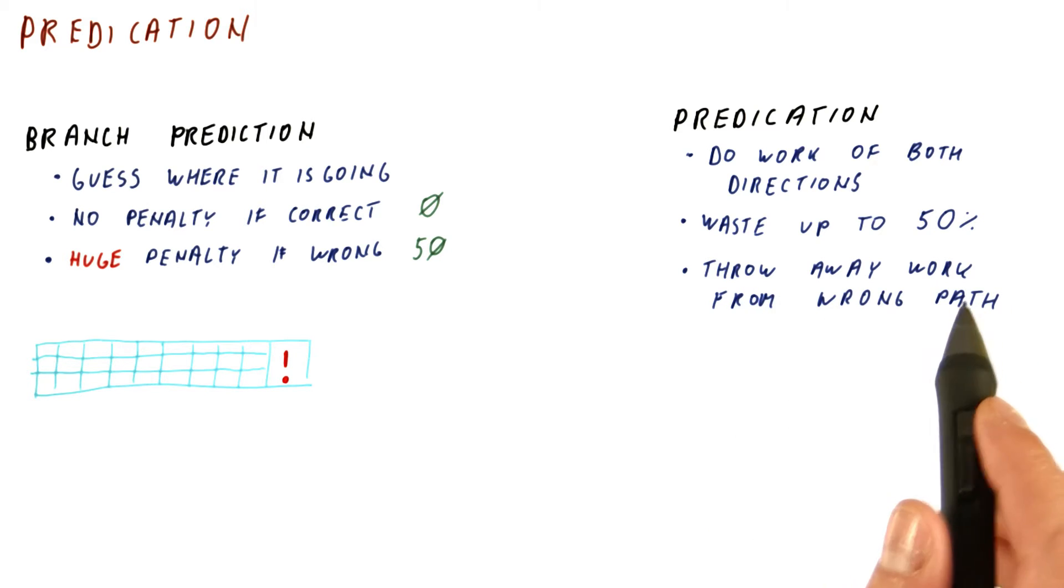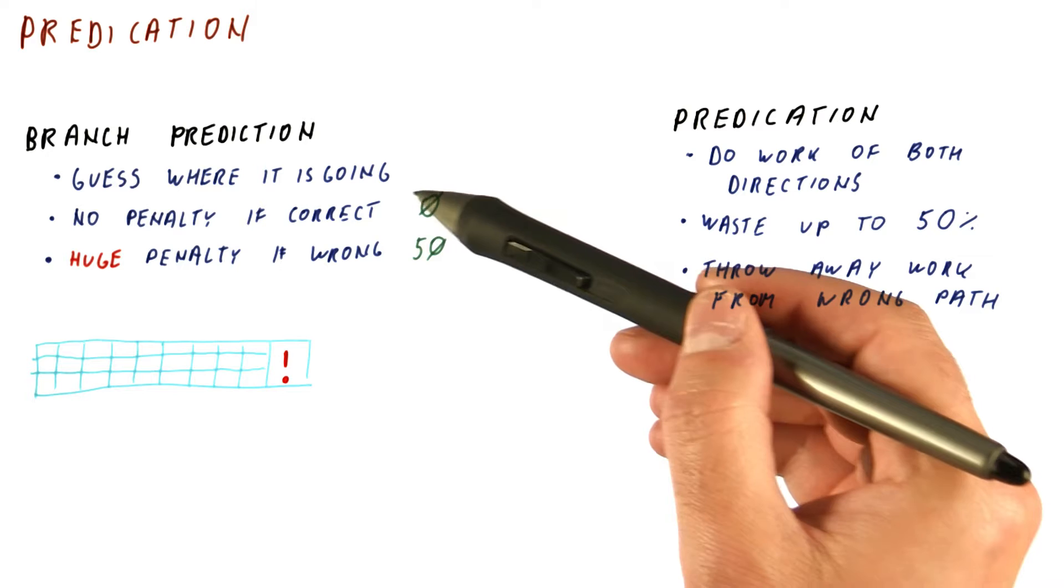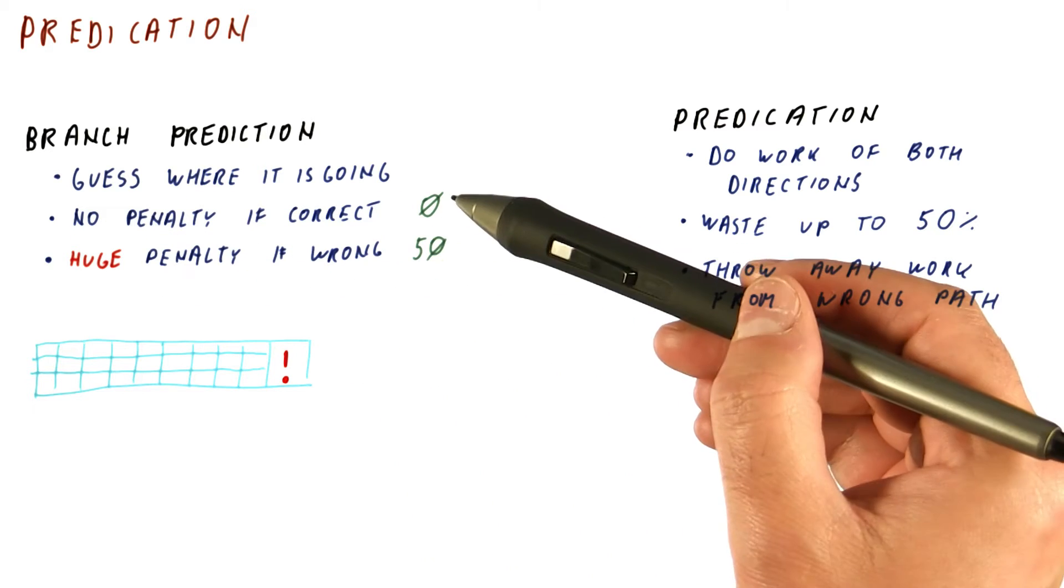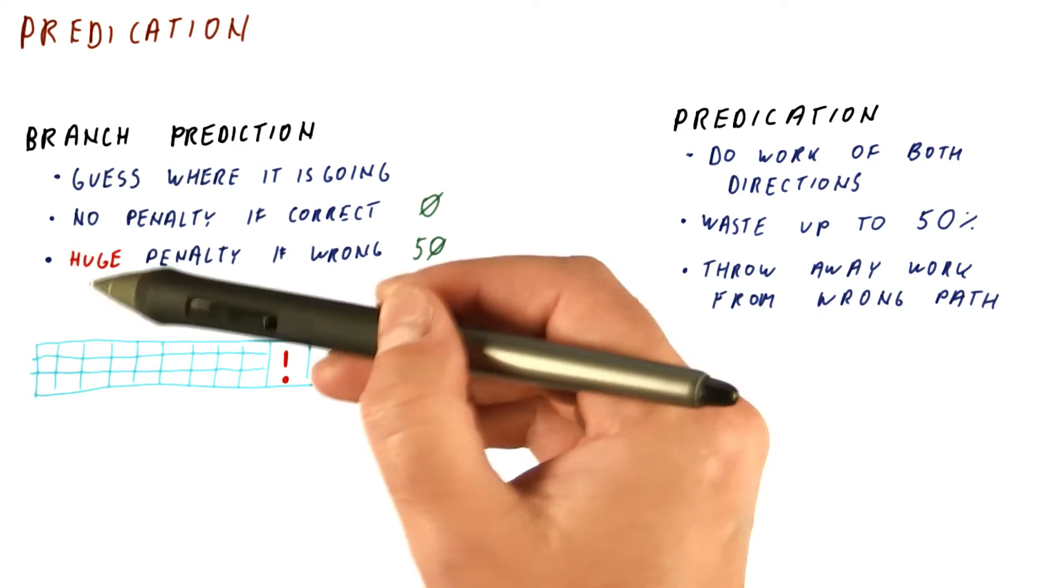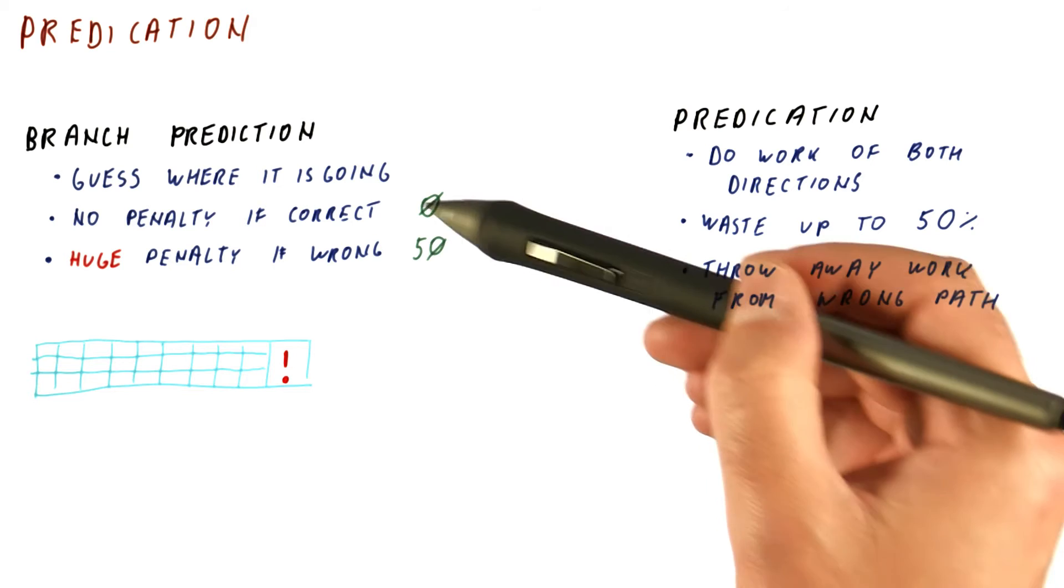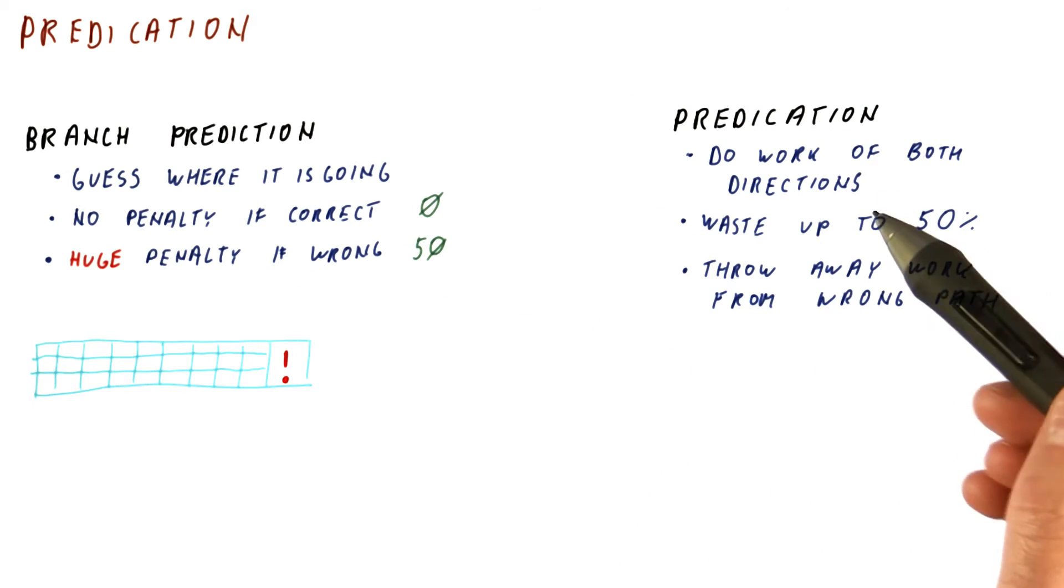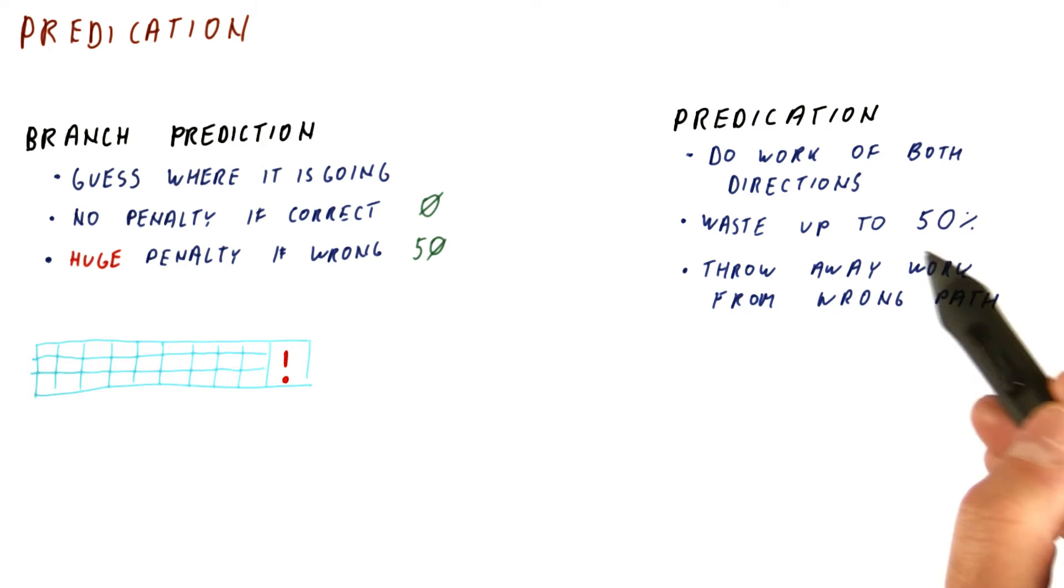So what is good about this? It seems like here, if we are correct, we lose nothing. If we are wrong, we lose a lot, but we can have very accurate prediction. While here, either way, we lose quite a bit.